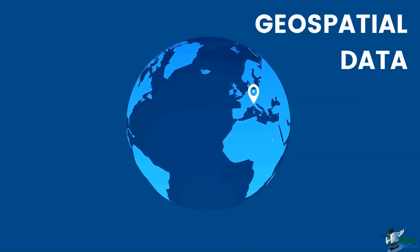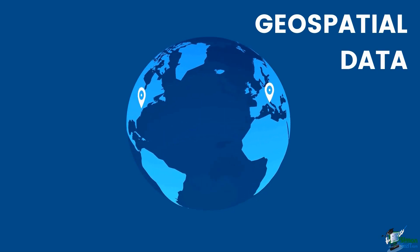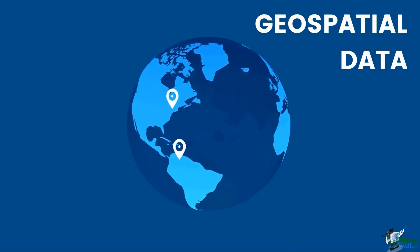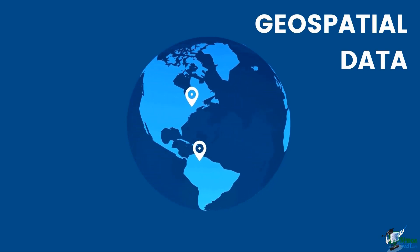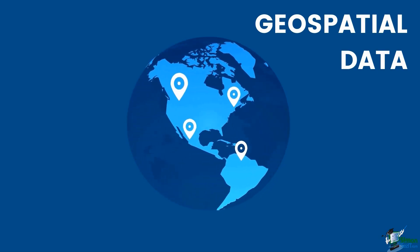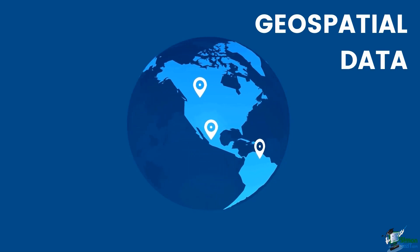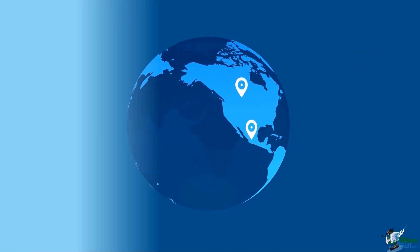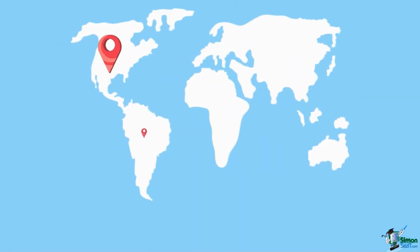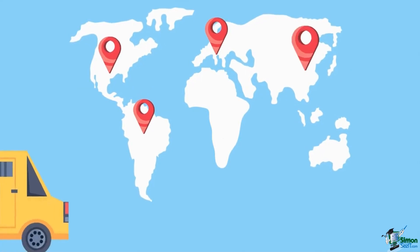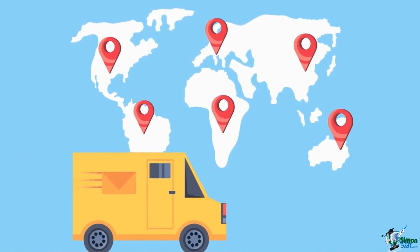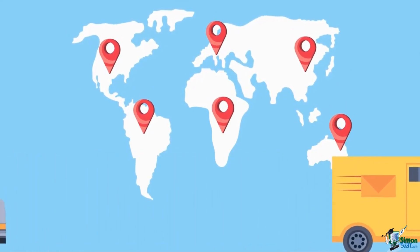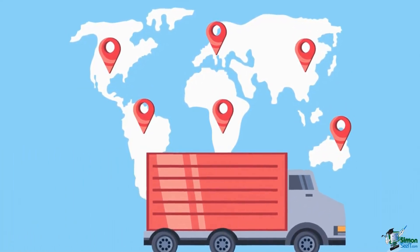Geospatial data represents features or objects on the Earth's surface. As long as it has a specific location on the globe, it is considered geospatial data. Whether it is airports, country boundaries, or bike trails, geospatial data can be extracted everywhere.